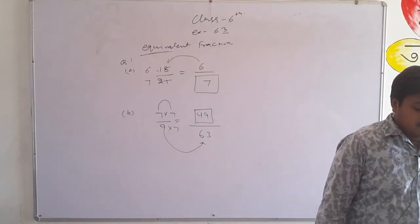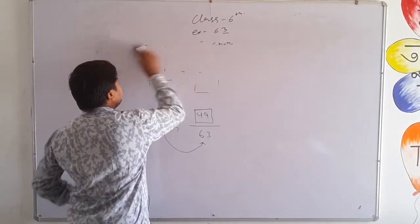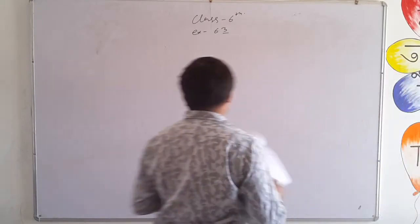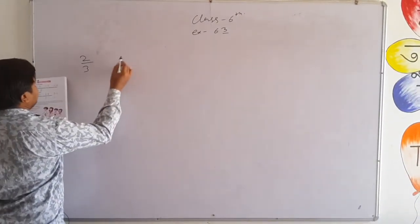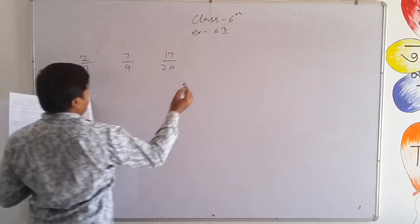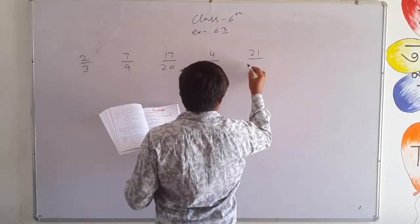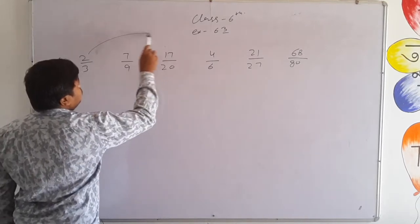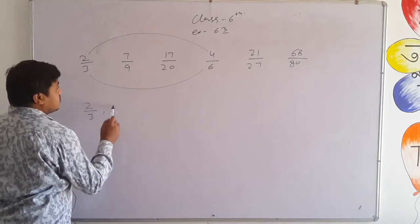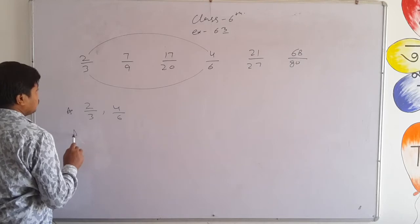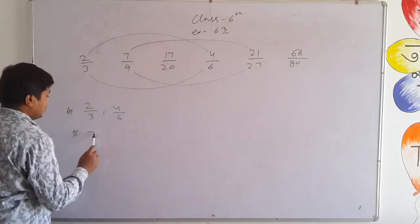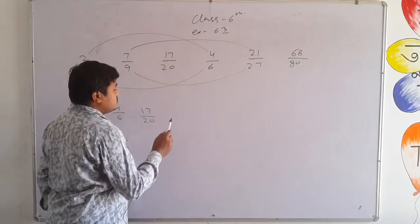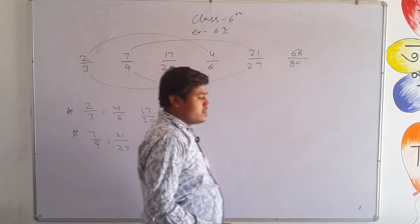Question number 2: make groups of equivalent fractions. The fractions given are: 2 upon 3, 7 upon 9, 17 upon 20, 4 upon 6, 21 upon 27, and 68 upon 80. First pair: 2 upon 3 and 4 upon 6 — 2 times 2 is 4, 3 times 2 is 6, so both are equivalent. Second pair: 7 upon 9 and 21 upon 27 — multiplied by 3 each. Third pair: 17 upon 20 and 68 upon 80 — 17 times 4 is 68, and 20 times 4 is 80. These three pairs of equivalent fractions are formed.